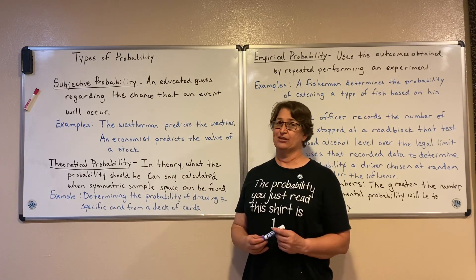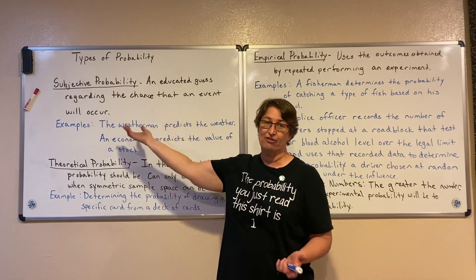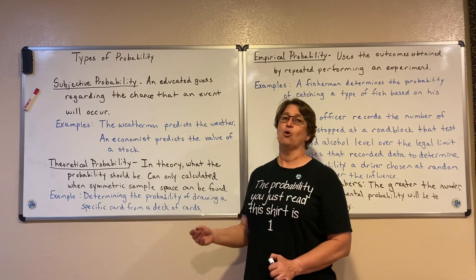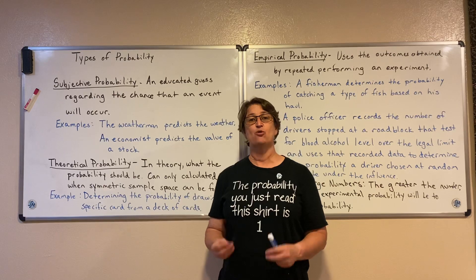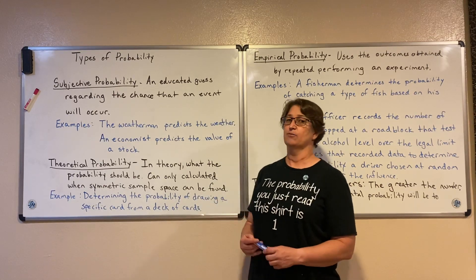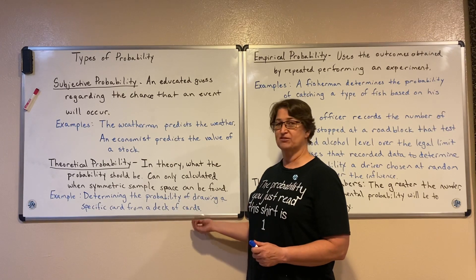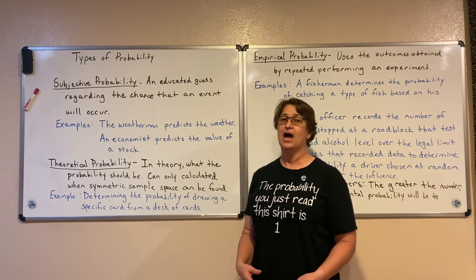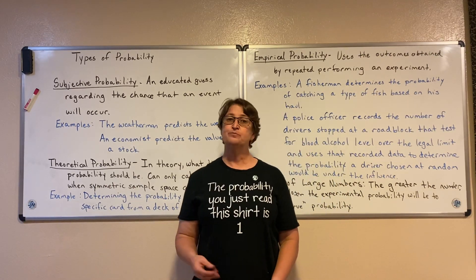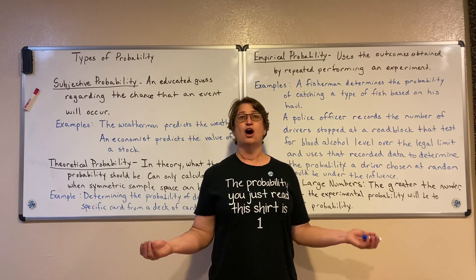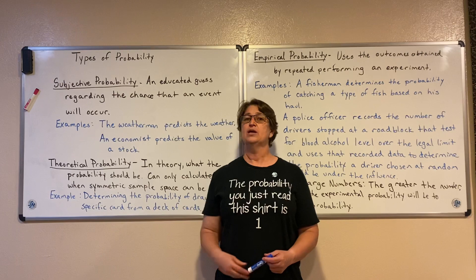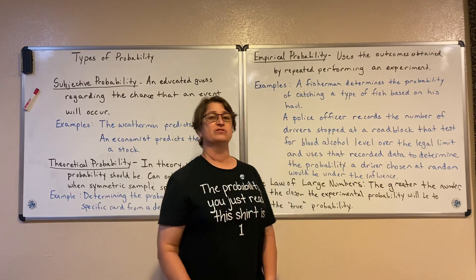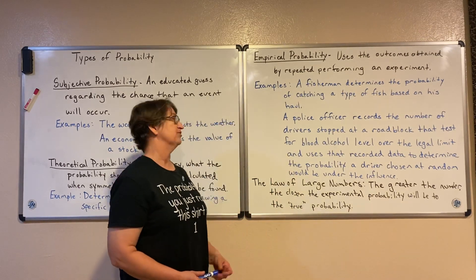But sometimes we can't do that. For instance, when dealing with the weather, I can't come up with a symmetric sample space for weather outcomes. I can only use theoretical probability when I know the symmetric sample space of an experiment. Examples include determining the probability of drawing a specific card from a deck of cards, since I know all the outcomes, or rolling a die — if I know all the outcomes, I can tell you what the probability is in theory.